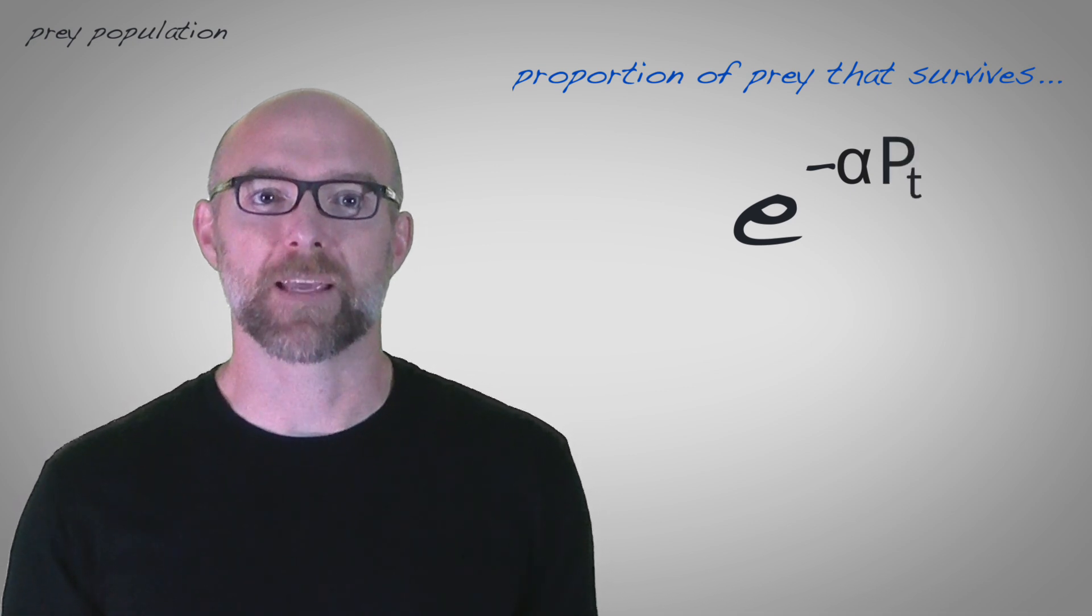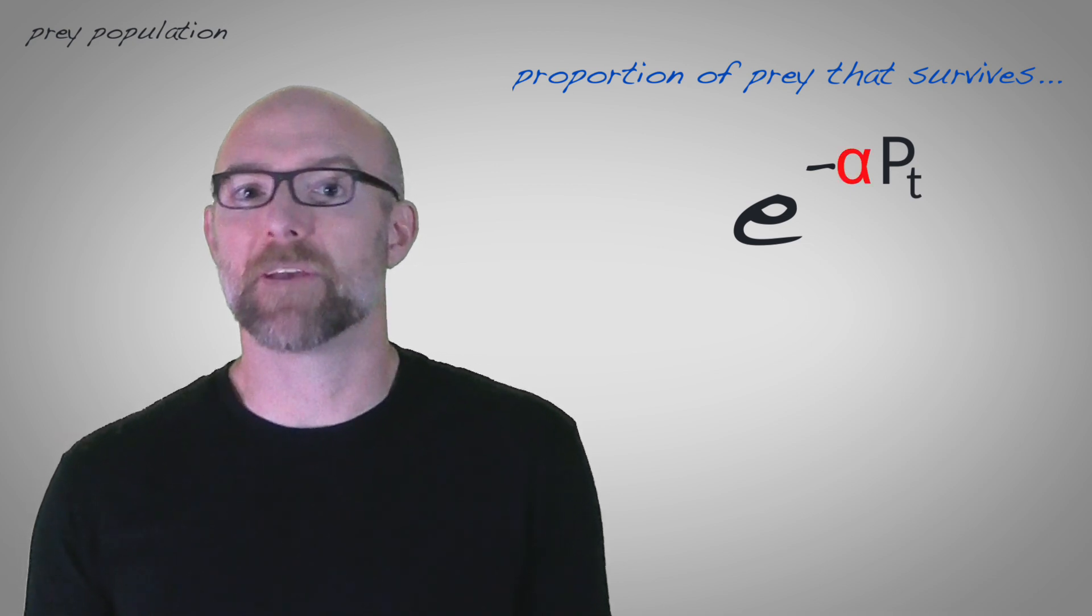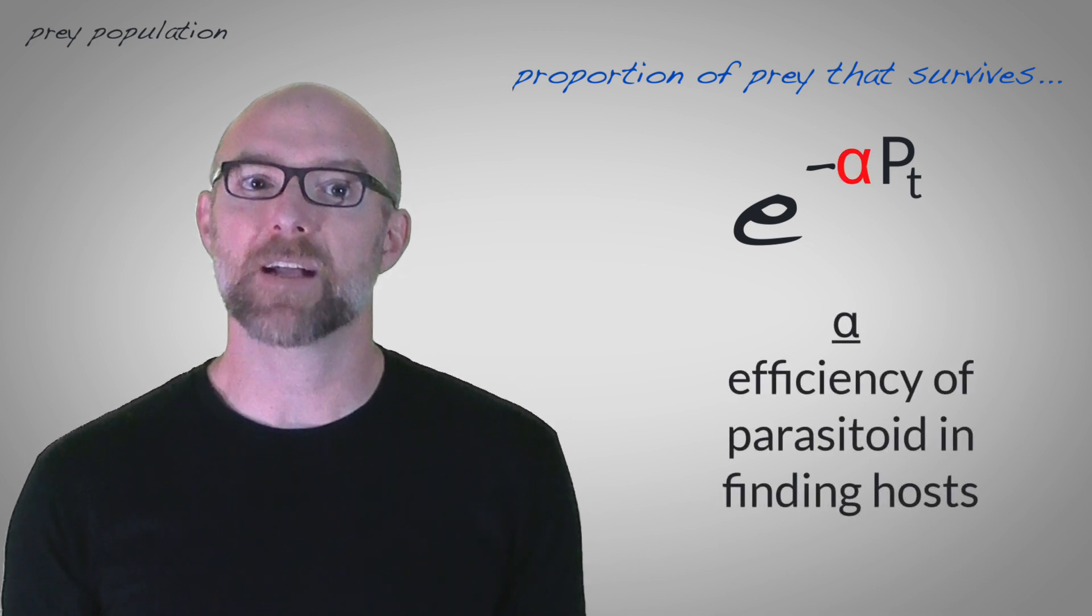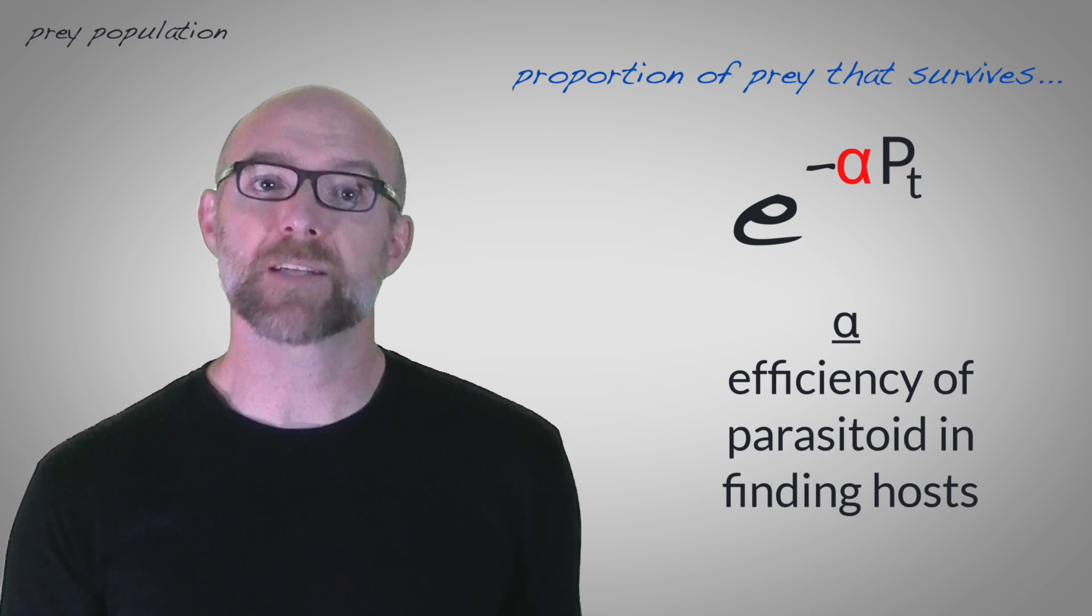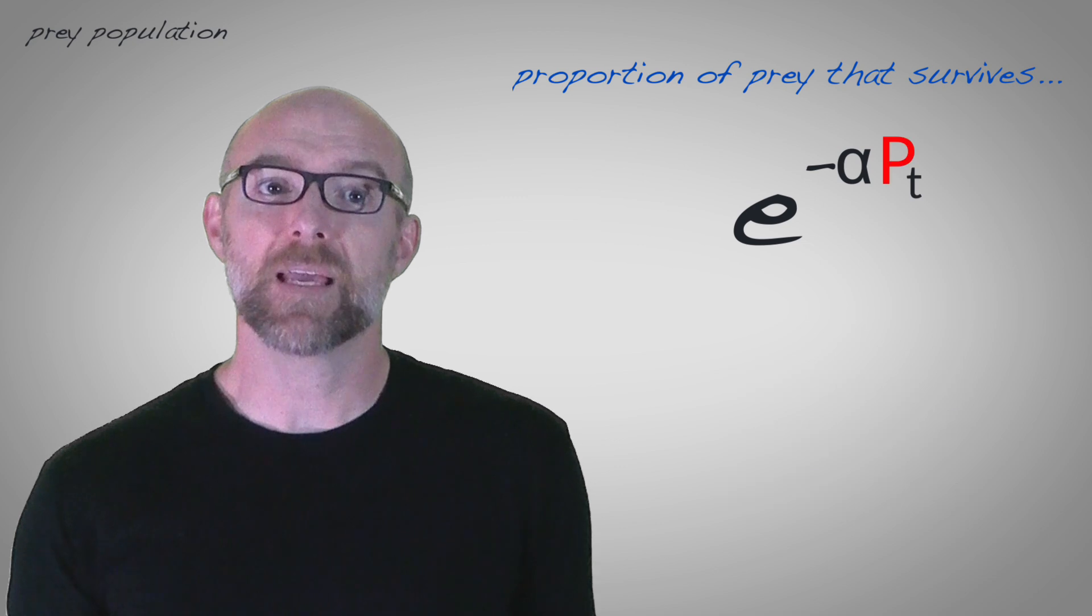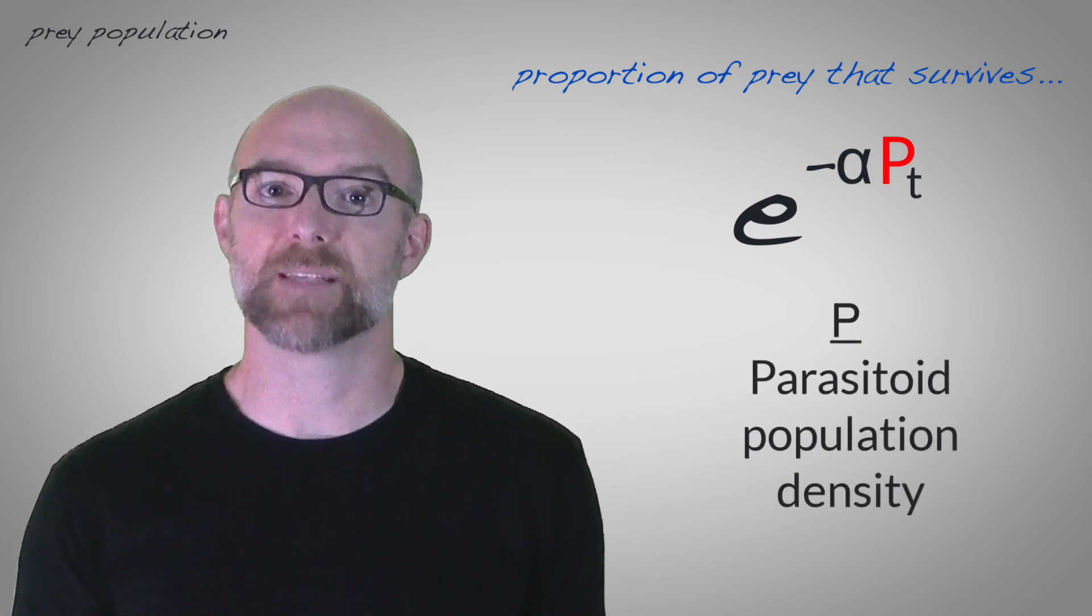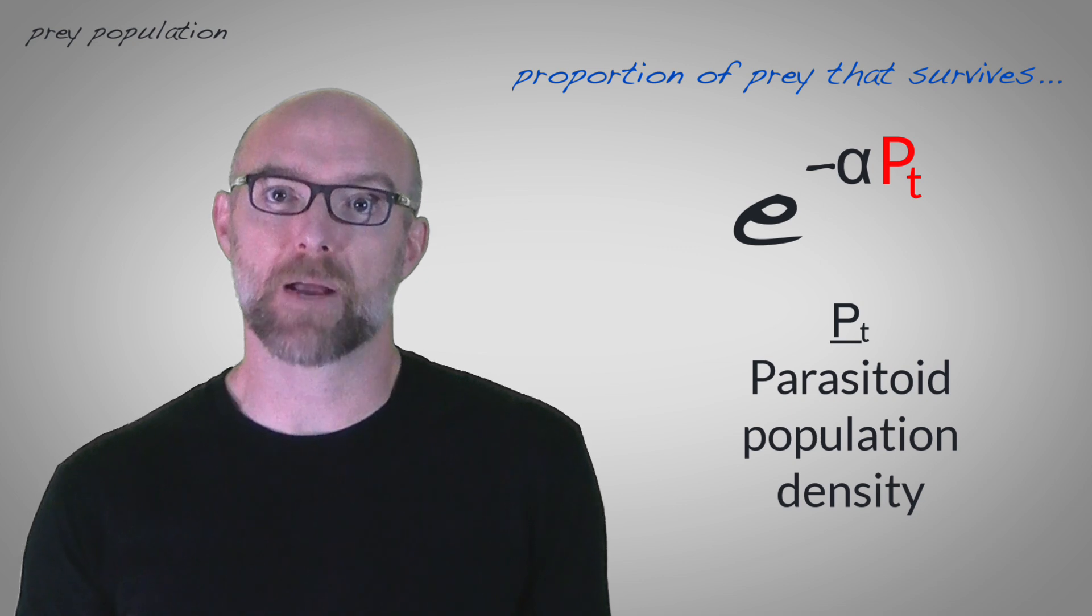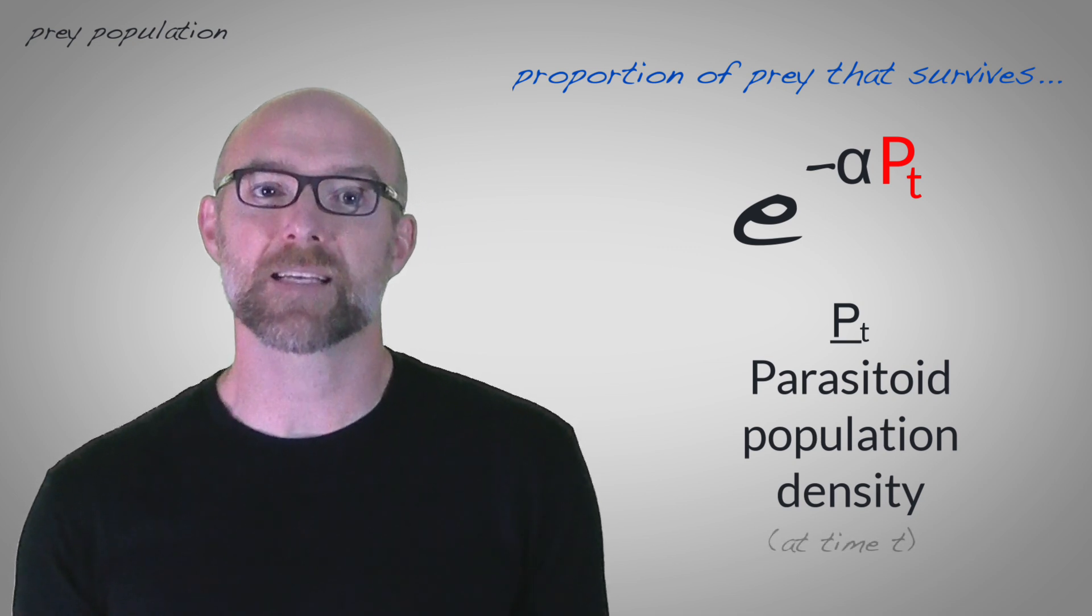There's lots to unpack here. Alpha is a variable that reflects the efficiency of a parasitoid species in finding hosts. You can imagine that this value might vary from one parasitoid species to the next. P is the parasitoid population density. And so P subscript t is just the parasitoid population density at time t.